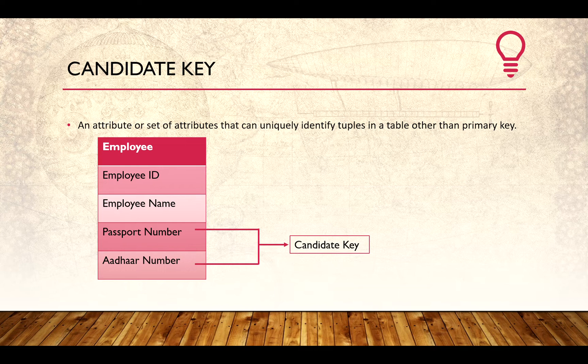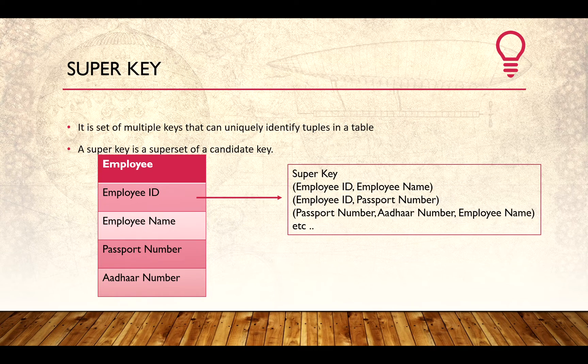Moving on to super key: a super key is a set of multiple keys that can uniquely identify records or tuples in a table. A super key is essentially a superset of a candidate key. Here we are trying to list out all combinations of different columns that can act as uniquely identifying fields for a row.